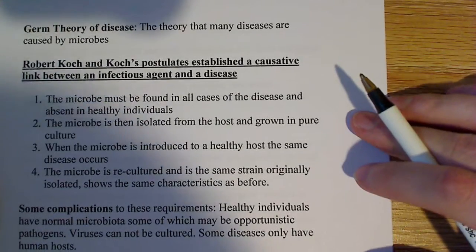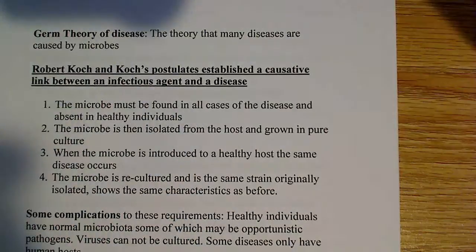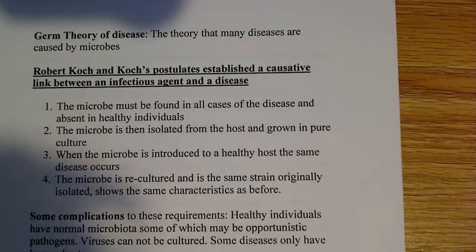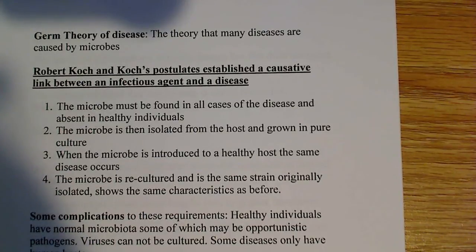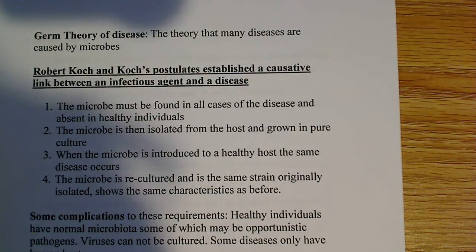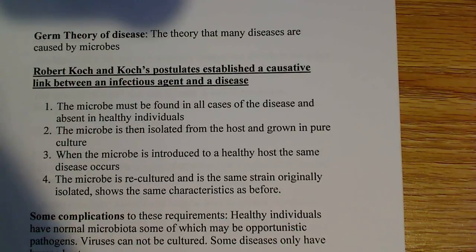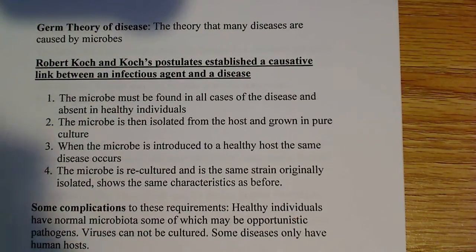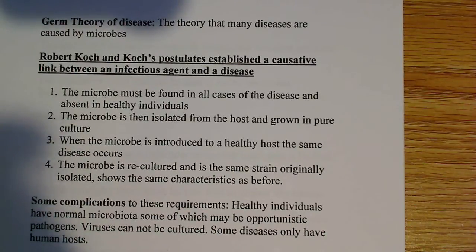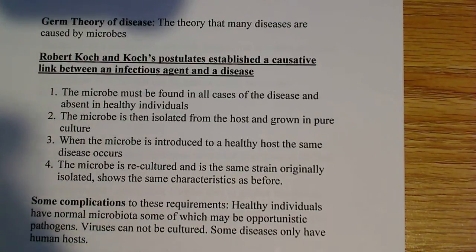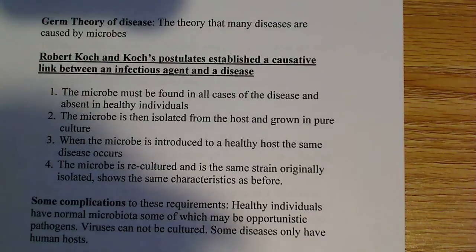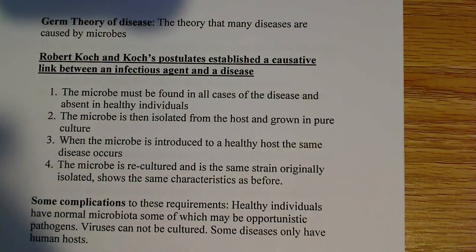Now, everybody's heard of this today, but at the time people didn't really understand it: the germ theory of disease — the theory that disease is caused by microbes. We now know that bacteria in some cases are pathogenic, and we also know that archaea are not pathogenic. Then we have Robert Koch, who came up with the Koch postulates, which established a causative link between the infectious agent and the disease.